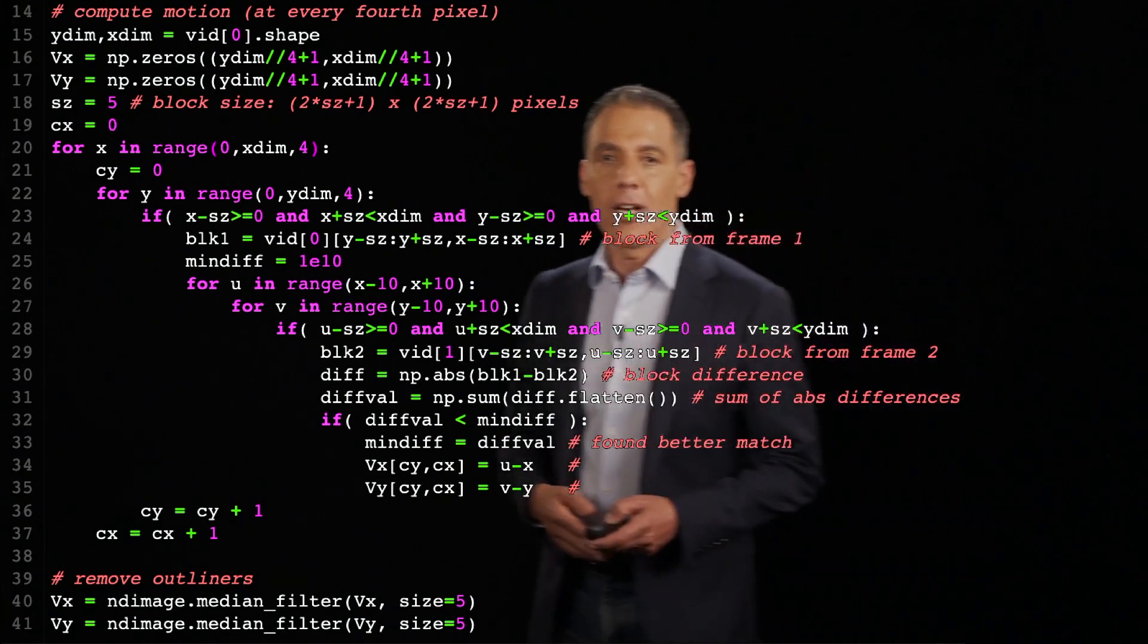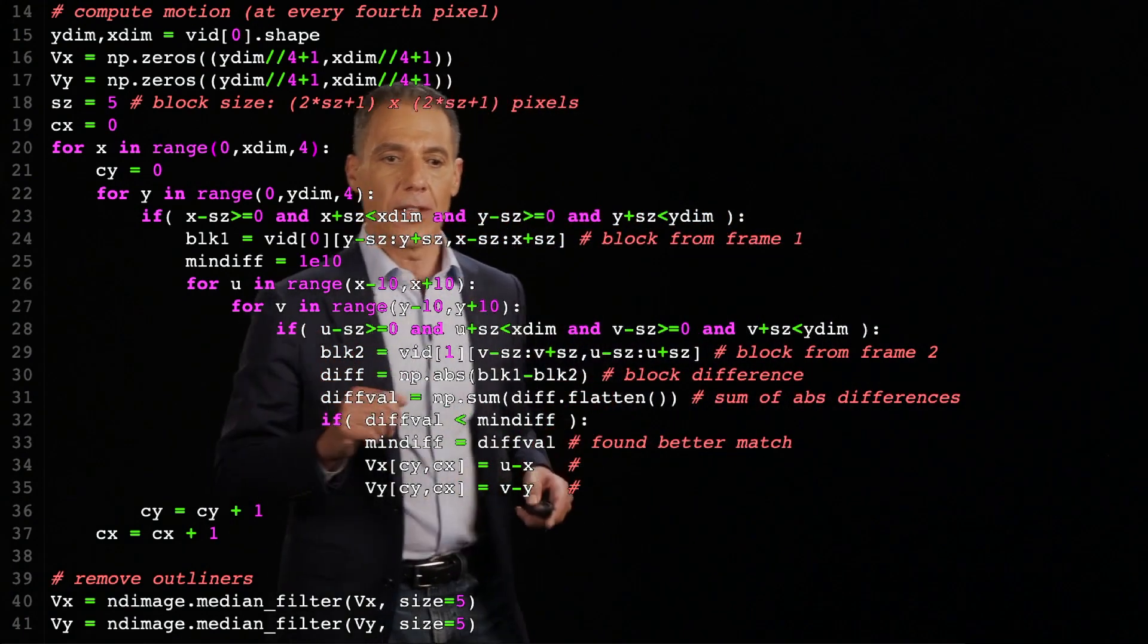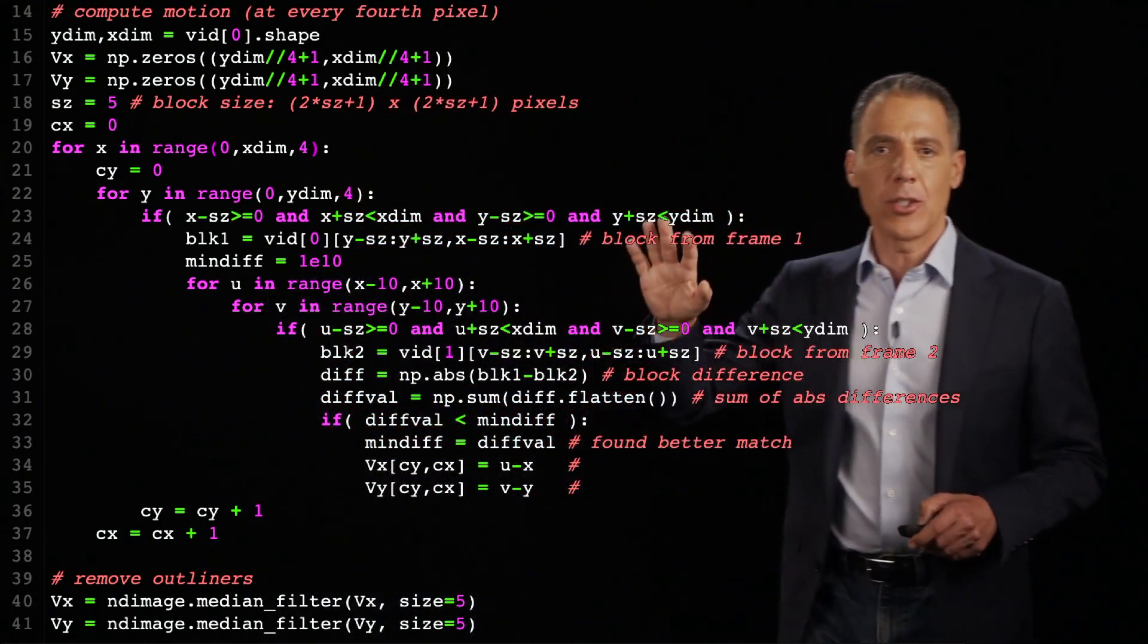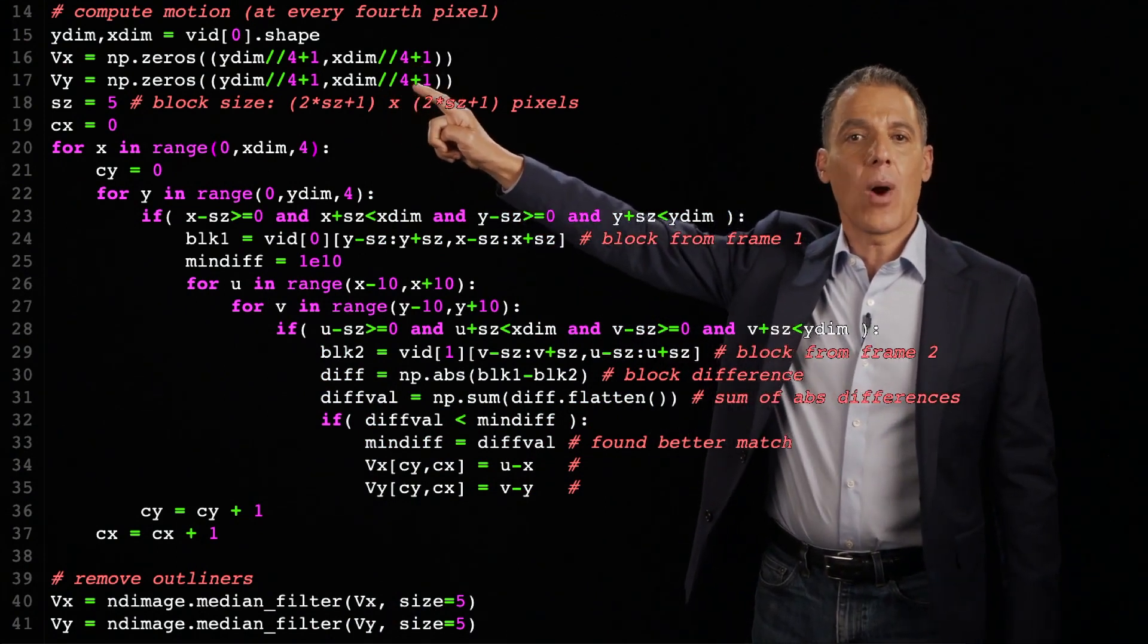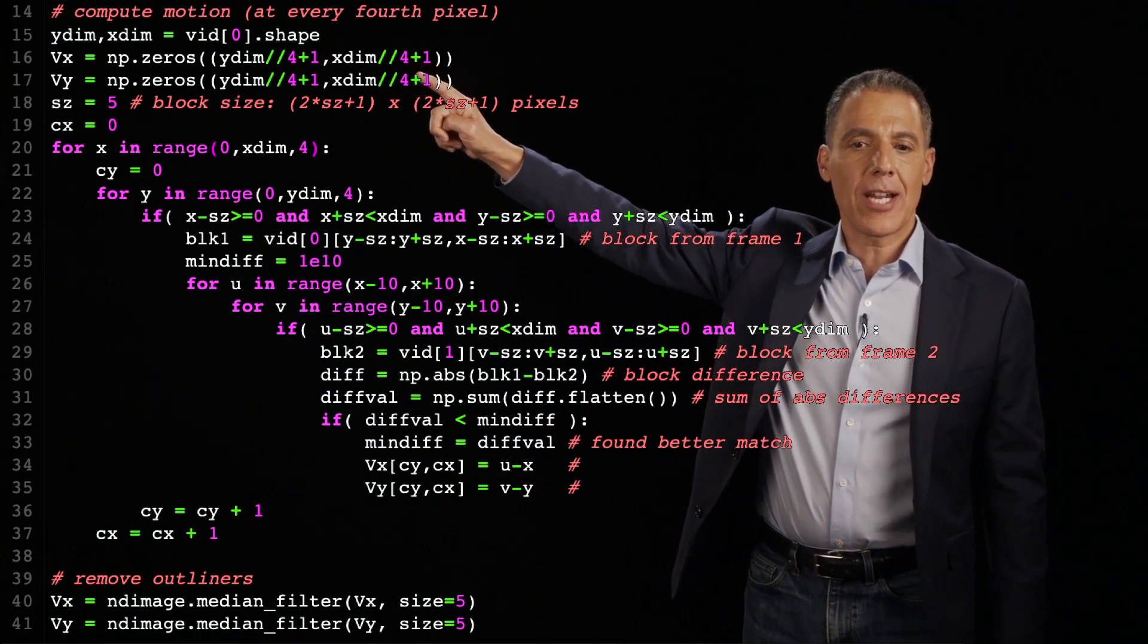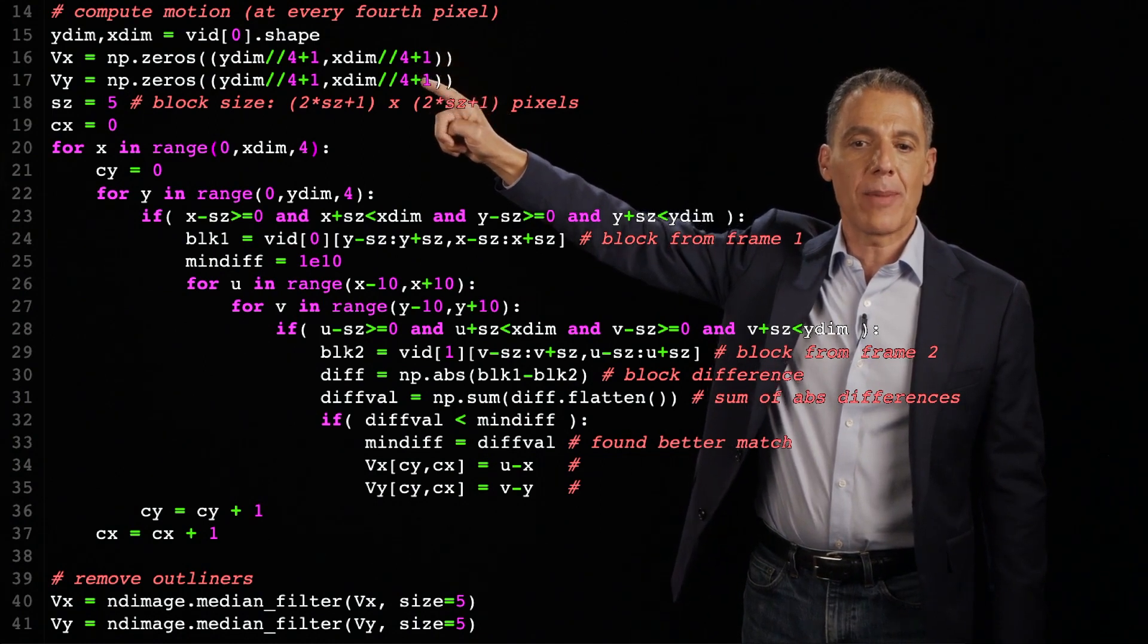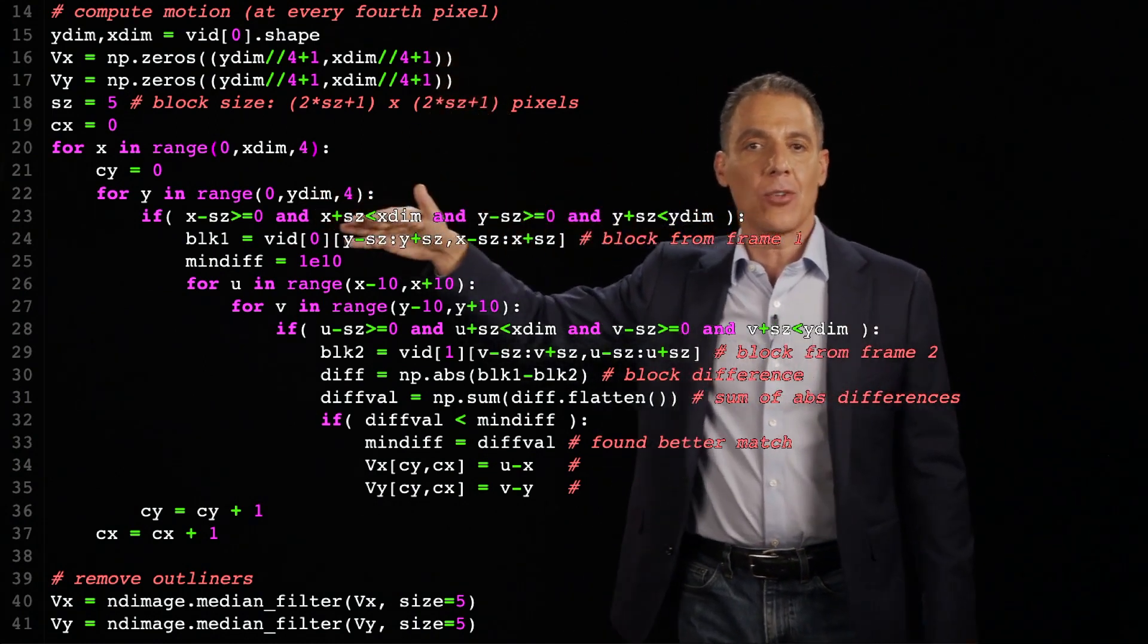All right, so this is the meat of the code, and let me just first orient you before going into the details. I'm going to initialize VX and VY. That's going to be my motion estimation. Notice that I'm dividing the dimensions of the image by four. I'm going to skip every fourth pixel.